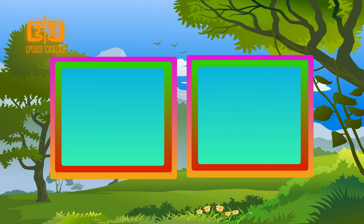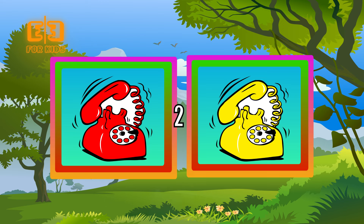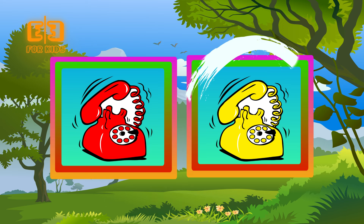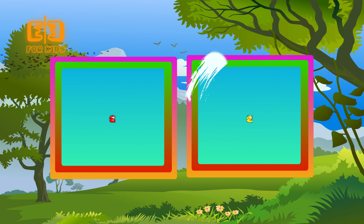Choose the yellow object. Three, two, one. Correct kids! A yellow telephone.